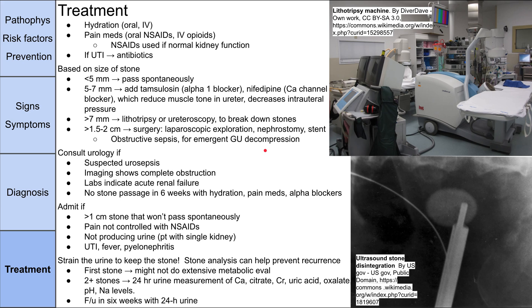There are situations that warrant contacting urology: suspected urosepsis (fever, low blood pressure, high heart rate from GU tract blockage), imaging showing complete obstruction, labs showing acute renal failure with very high creatinine and BUN, or if supportive measures over six weeks haven't passed the stone. Reasons to admit include stones greater than one centimeter, uncontrolled pain, absent urine output, single kidney, or UTI with fever and pyelonephritis.